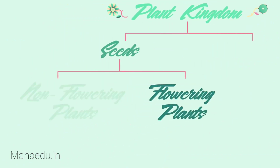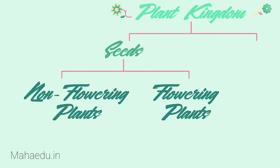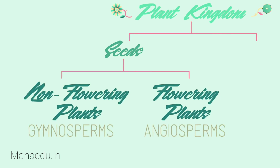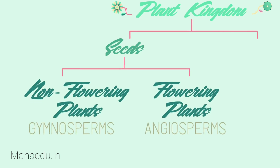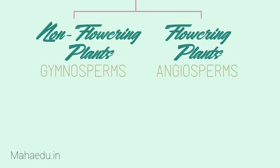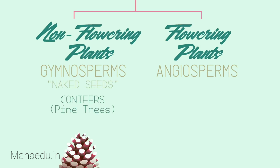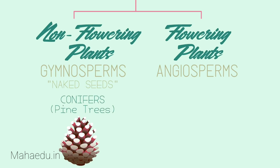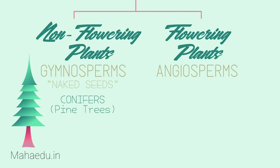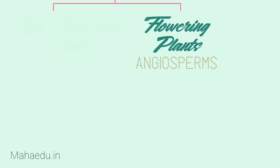Seed plants can be split into flowering plants and non-flowering plants. These have scientific names of gymnosperms and angiosperms. Non-flowering plants do not produce flowers. They are also reproduced by means of exposed seed or ovule. Gymnosperm means naked seed. Like with conifers, the cone on a pine tree is a naked seed and they do not produce flowers. Gymnosperms are usually tall, evergreen trees, often with needle-shaped leaves, and they are usually found in dry places.